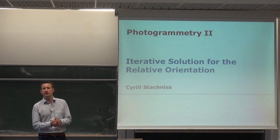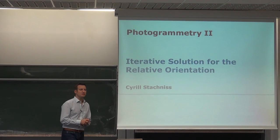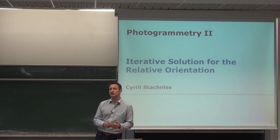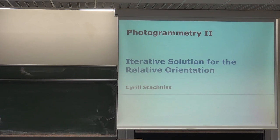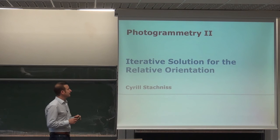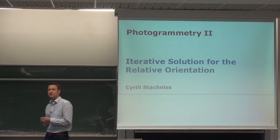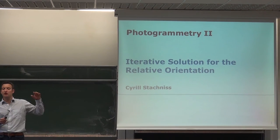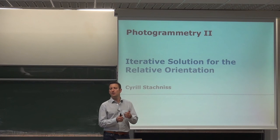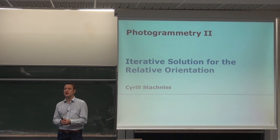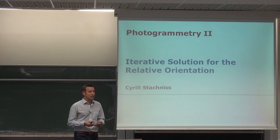We are looking today into the relative orientation of an image pair — this is the last lecture on relative orientation between two images. Last week we looked into a direct solution for computing the fundamental matrix or essential matrix using the eight-point algorithm. Today we want to use this result as an initial guess for an iterative least squares solution for estimating the relative orientation.